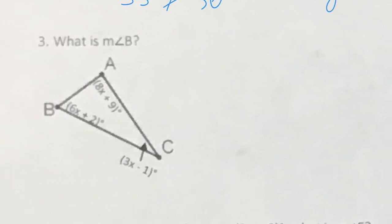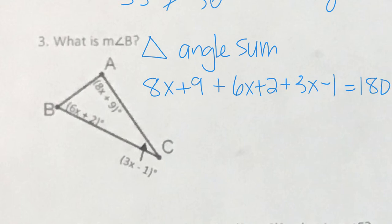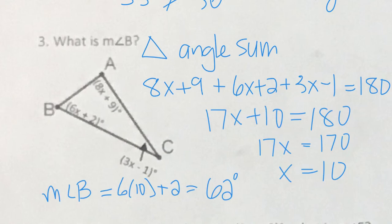Number three asks for the measure of angle B. This is a triangle angle sum problem — our angles add up to 180 degrees. The three angles add up to 180, so we solve for X and plug it back in to find the measure of angle B. X comes out to be 10, and when we plug 10 back in, we get 62 degrees.